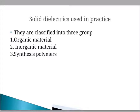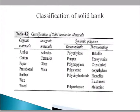In the organic material, amber, cotton, paper, pressboard, rubber, wax, and wood are the different materials involved. In the inorganic material, ceramic, glass, mica, and asbestos are the different types present.